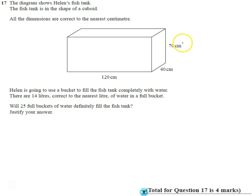First of all, if this is measured to the nearest centimeter, then this has an error bound ranging from 69.5 to 70.5—that's the upper bound and the lower bound.